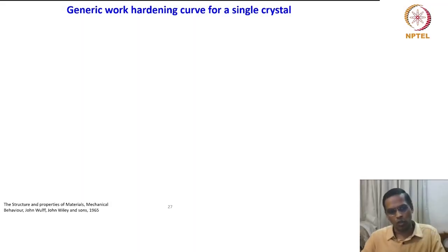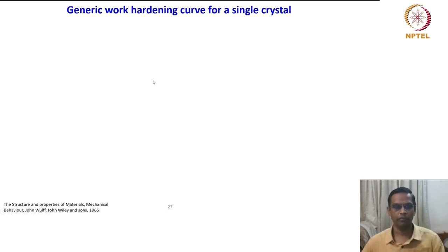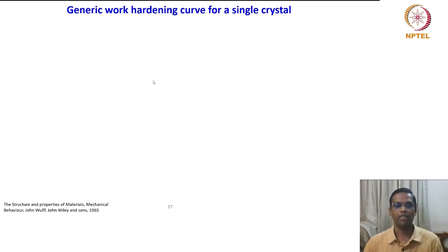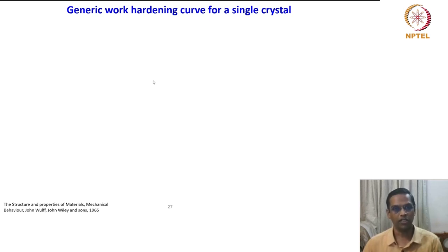The other important aspect we have to know about single crystal plastic deformation is work hardening behaviour. What is this work hardening? In crystalline plastic deformation, plasticity is always considered as dislocation mediated plasticity. We have seen several dislocation characteristics in terms of generation, interaction, multiplication, intersections, and dislocation reactions. All those concepts will come in handy when we talk about work hardening.